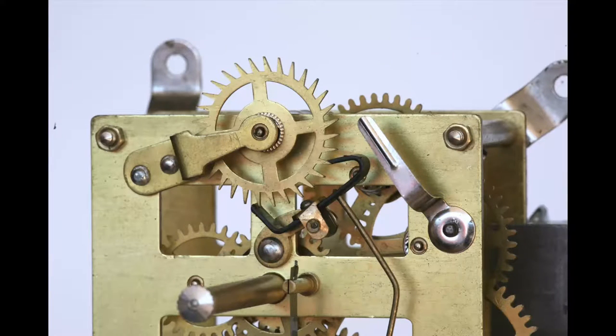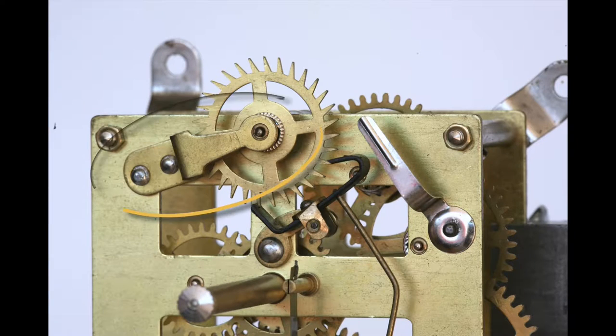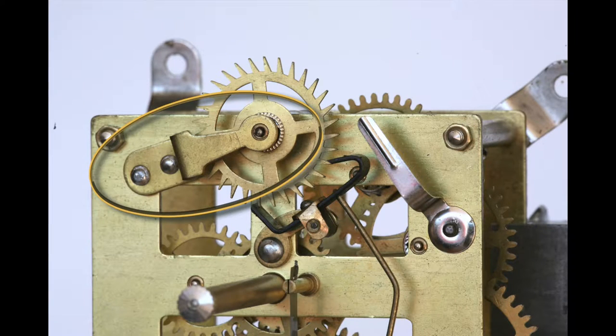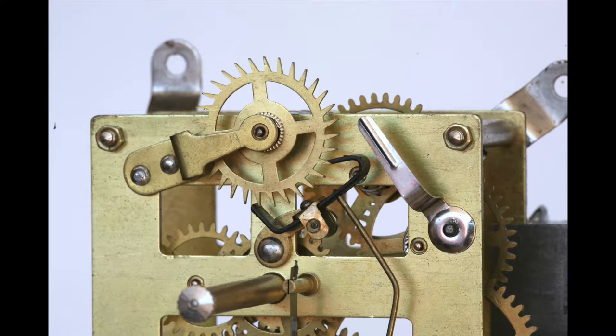This escape wheel is mounted outside of the movement plates. This bent strip of brass is called the escape cock. The escape wheel and anchor can be located on the front, rear, or in between the plates of the movement.